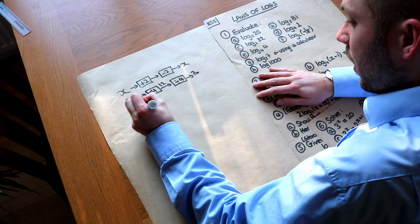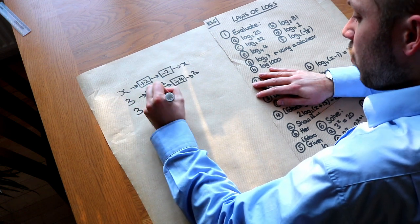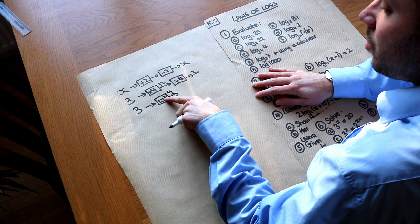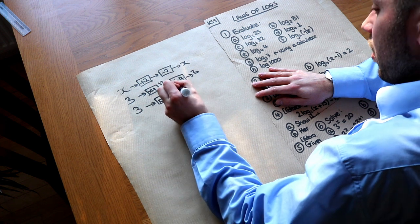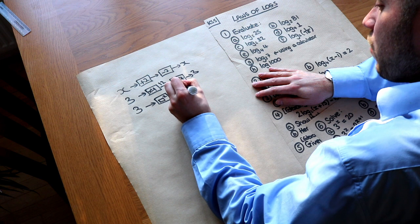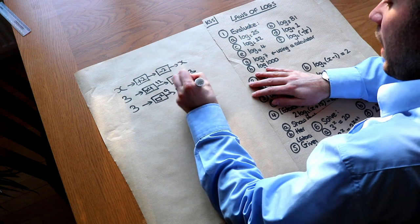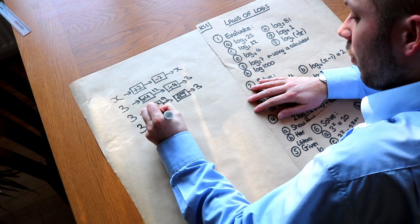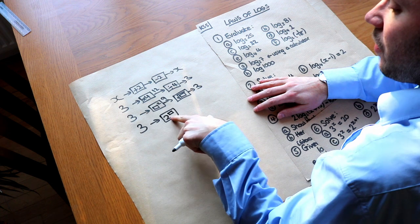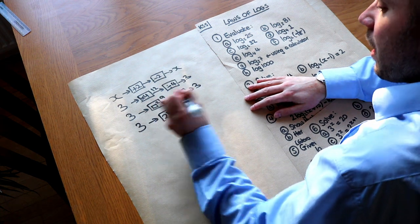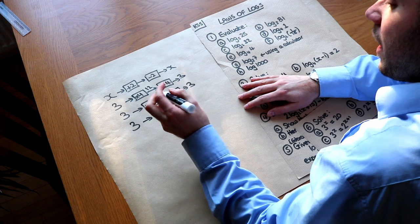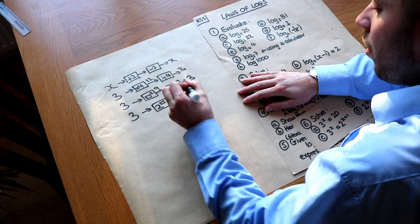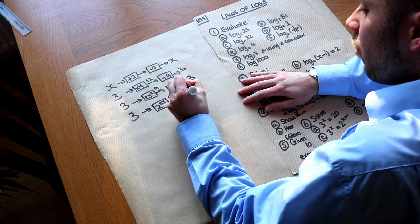Then what about squaring? If we had 3 and we squared it, we would get 9. How do you undo that squared to get back from 9 to 3? Well you would square root it. So you'd square root that input and the 9 square rooted gets you back to 3. Now what about if we had 3 and we did 2 to the power of that input? 2 to the power of 3 is 8. How do we get back from that 8 to the 3? And that's where we have something called logs.